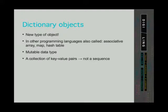Dictionaries are not a sequence. They are a collection of key-value pairs. What do we mean when we say that a dictionary is not a sequence? It means that the order of elements in a dictionary is not important.